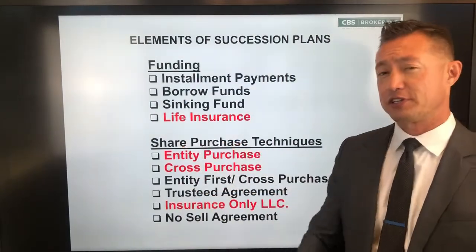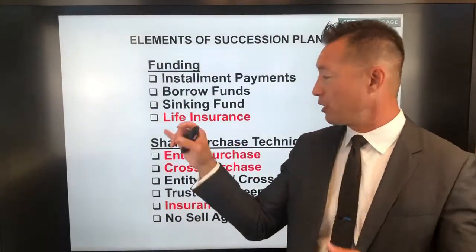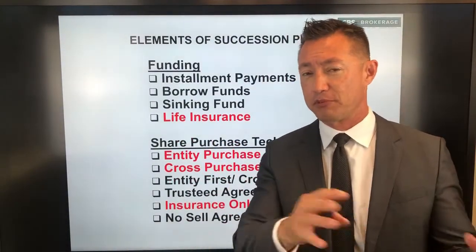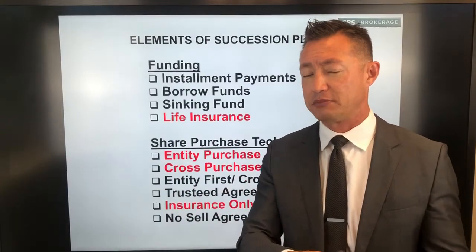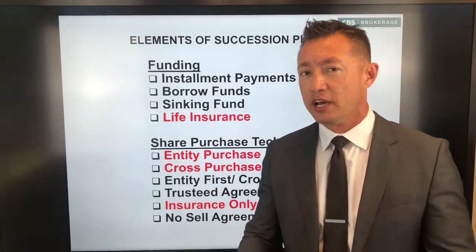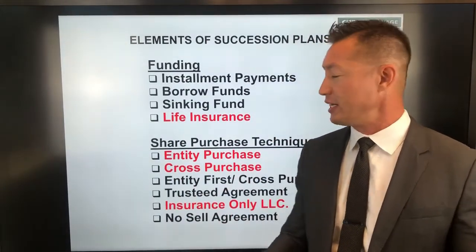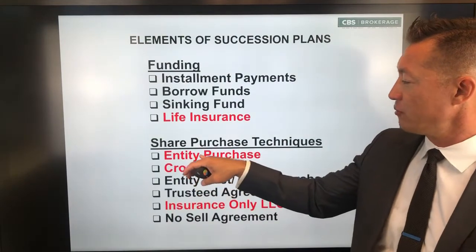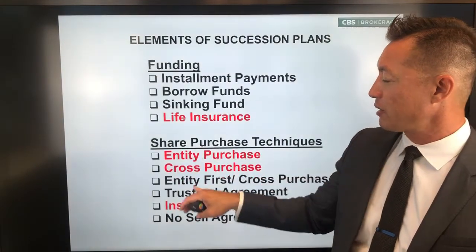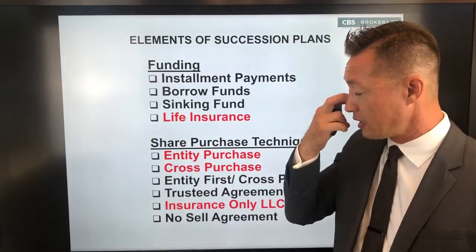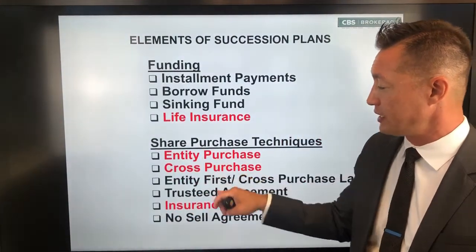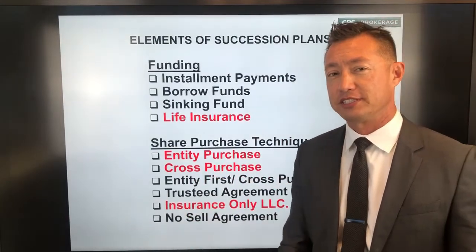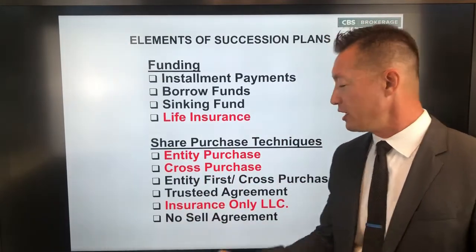We can also use life insurance partly as a sinking fund. Some term insurance and some permanent insurance is oftentimes used for a buyout during lifetime, not just for a tax-free death benefit. There are three primary techniques I'm going to cover today: entity purchase, cross-purchase, and insurance-only LLCs as a comparison. The other structures are really versions of these three anyway.